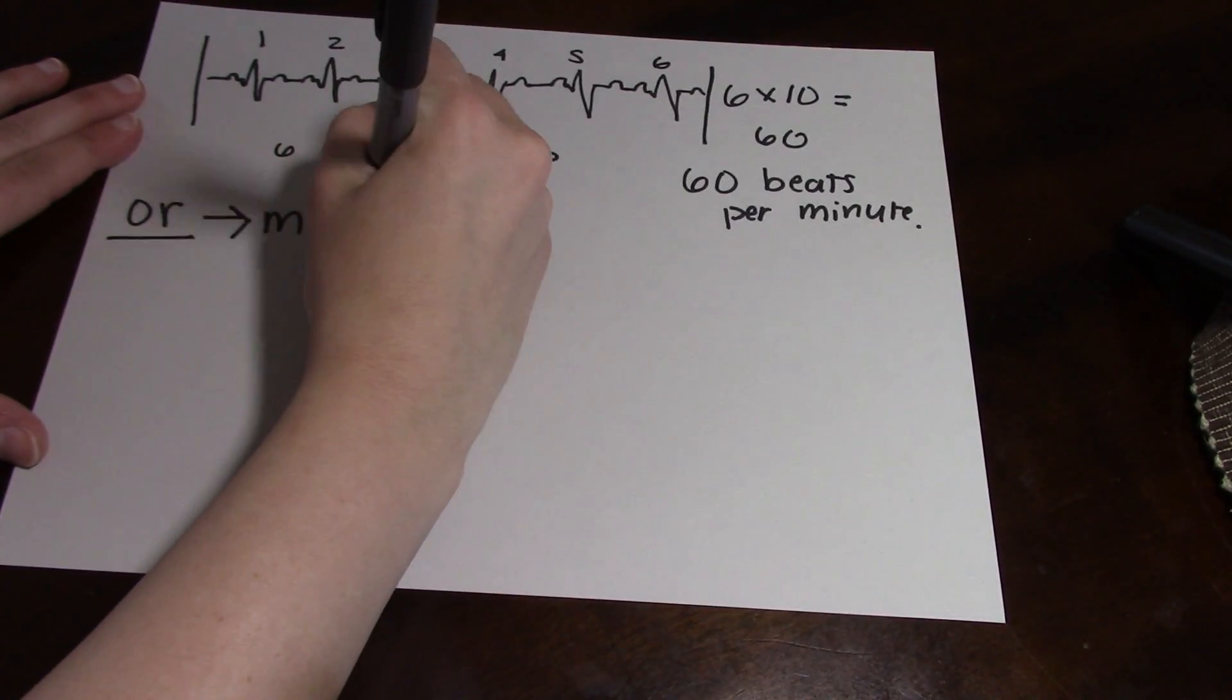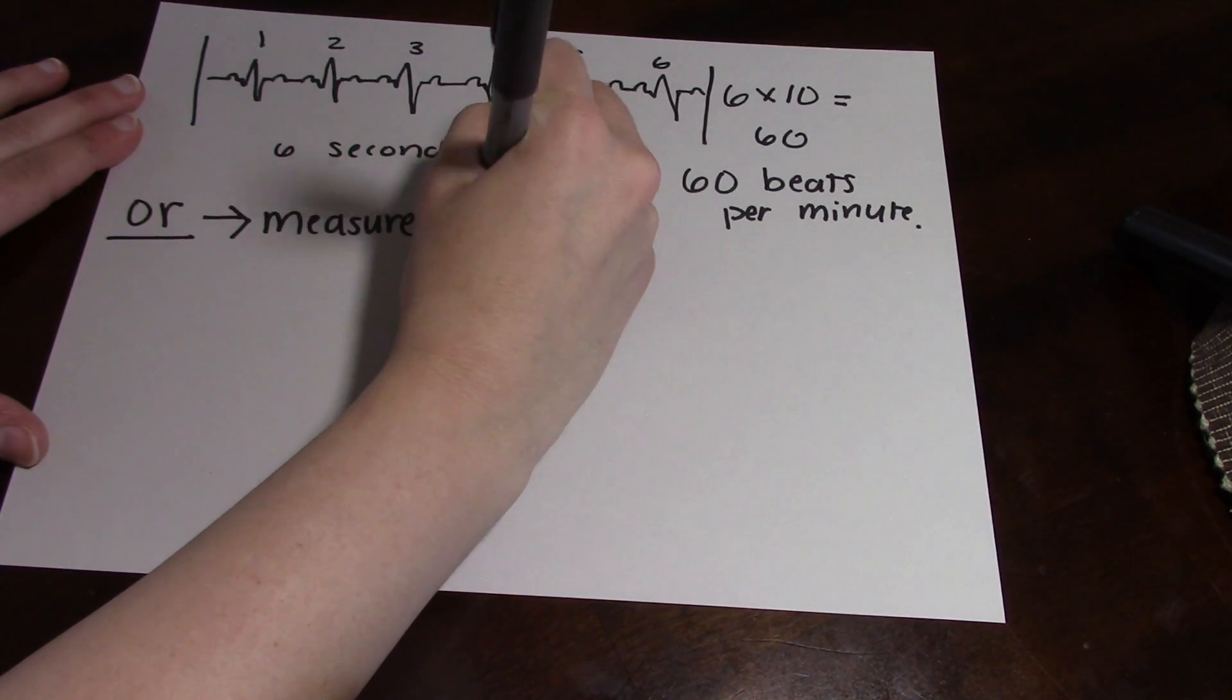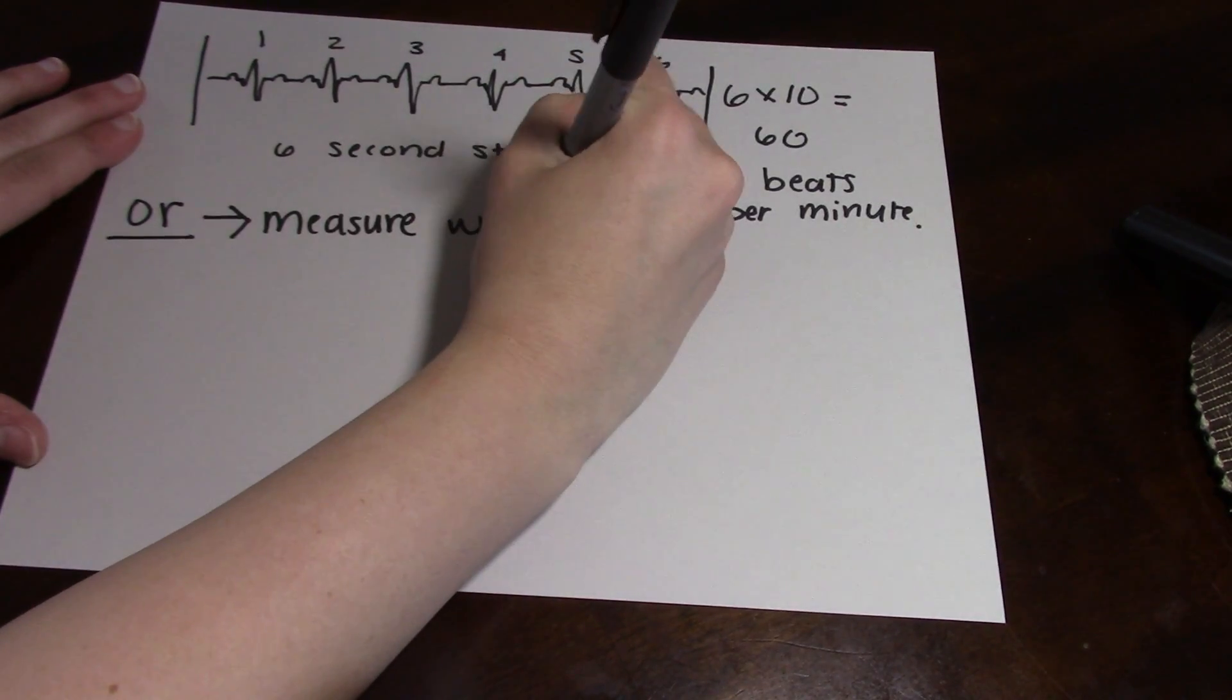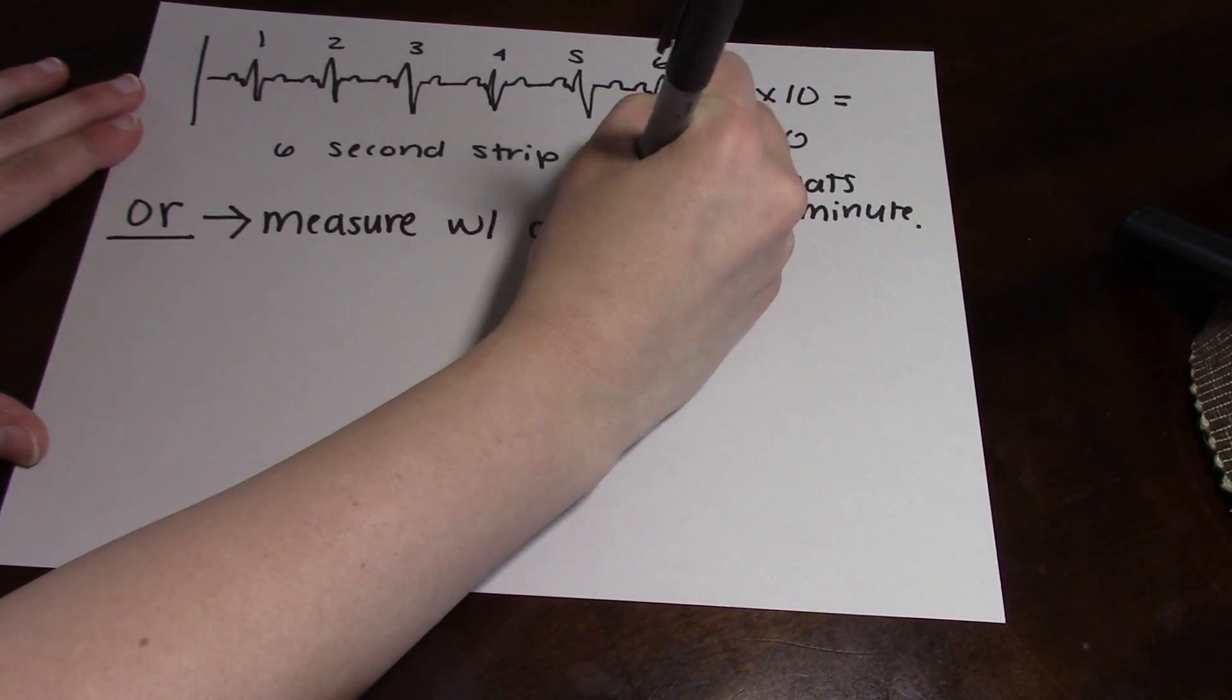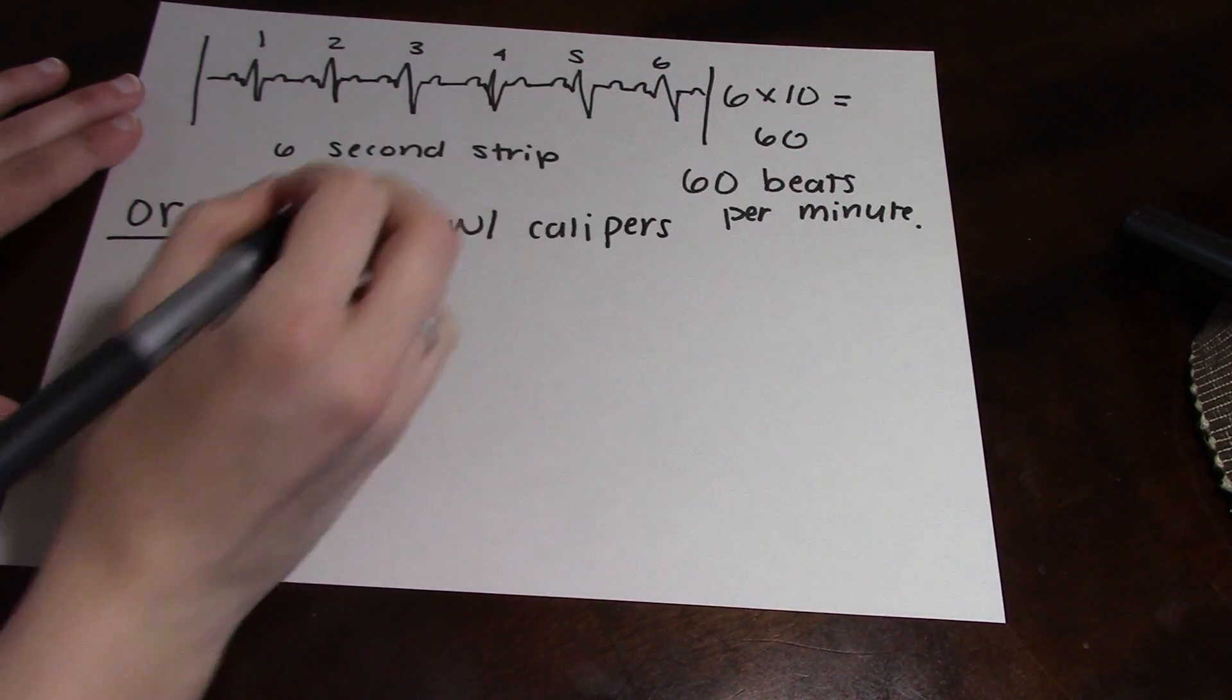The other way to measure this is by having calipers, but we're not going to get that in depth, so just know that that's another way that you can measure how quick a rhythm is going.